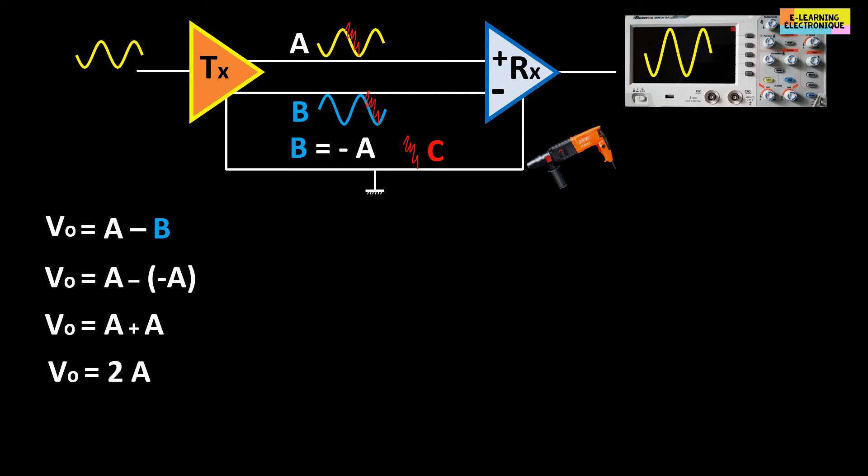We find our input signal with an amplification to two times its initial value. Concerning the parasitic signal noted here C, as it has the same polarity on the two lines, the subtraction operation gives C minus C equal zero. Finally, the spurious signal is removed.